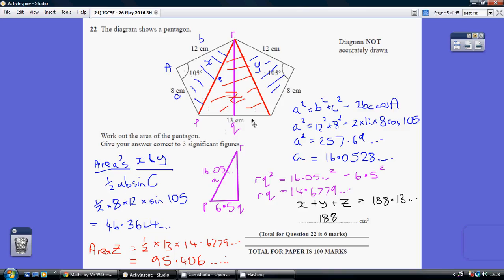So I'm going to do this by way of base times perpendicular height. Base times perpendicular height. So eventually I'm going to want to work out the length of that line, that perpendicular line down there. I'm calling this point Q, RQ.